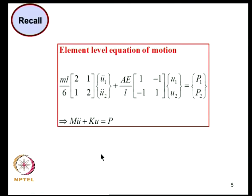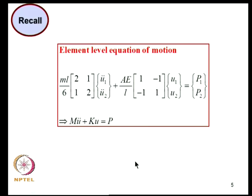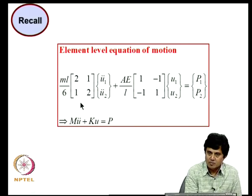Using Lagrange's equation — substituting the displacement field into the kinetic and potential energy expressions — we get the element-level equation of motion. Here U1 double-dot and U2 double-dot form the acceleration vector, U1 and U2 form the displacement vector, M is the element mass matrix, and K is the element stiffness matrix. Because we used the same interpolation functions for both mass and stiffness matrix computations, this mass matrix is called the consistent mass matrix.